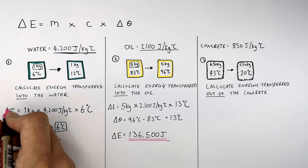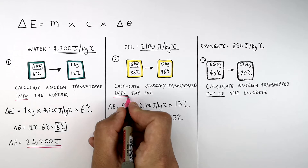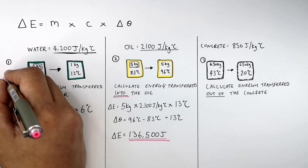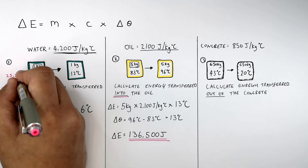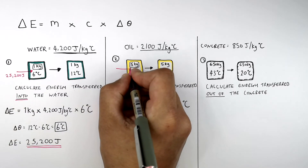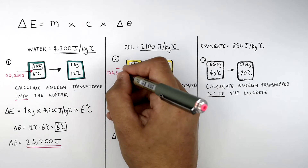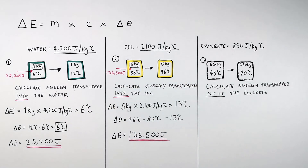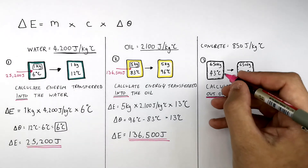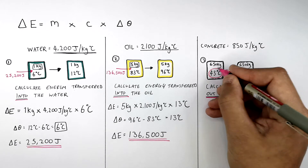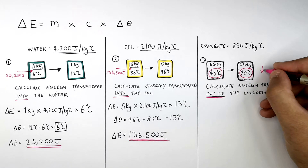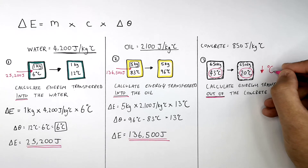In these two examples, energy has been transferred into the objects to increase their temperature. In the first example, 25,200 joules of energy was transferred into the thermal energy store of the water. In the third example, we are calculating the energy transferred out of the concrete to decrease its temperature from 43°C to 20°C — so energy is being transferred out of the concrete.